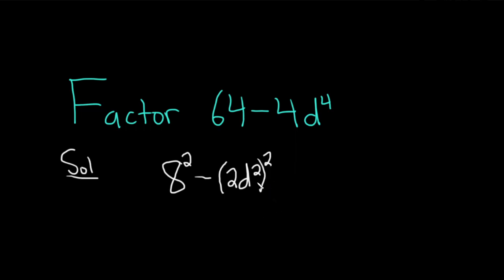And you can check, basically, when you have something like this, you just square each piece. 2 squared is 4. d squared squared is, you multiply 2 times 2 is 4. Everything is okay.